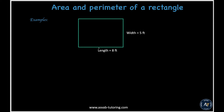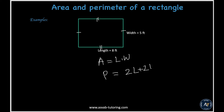First we'll learn how to find the area of a rectangle. A rectangle is a four-sided shape where opposite sides are the same. The area equals length times width, and the perimeter equals two times length plus two times width.